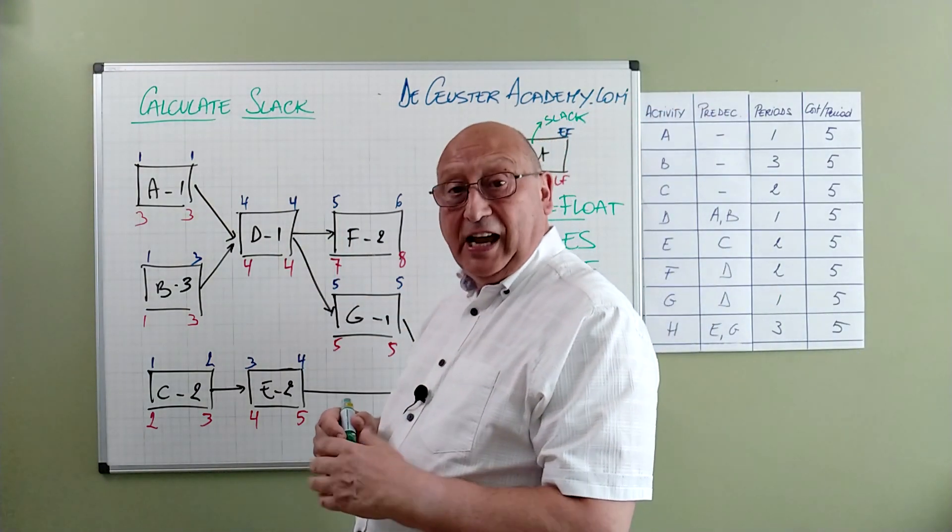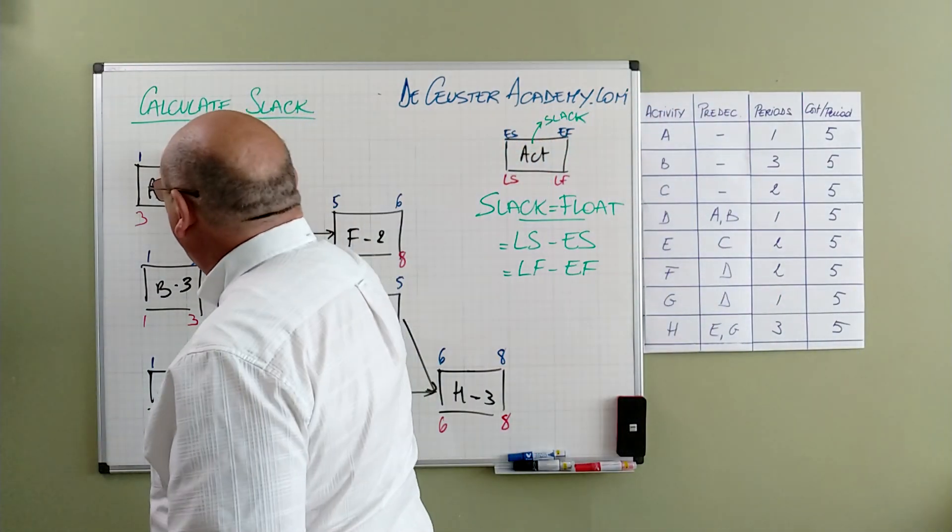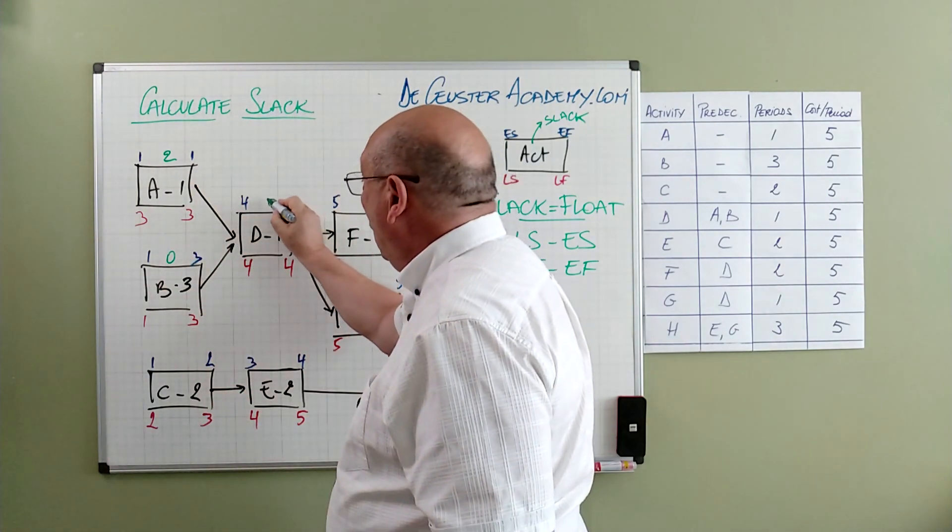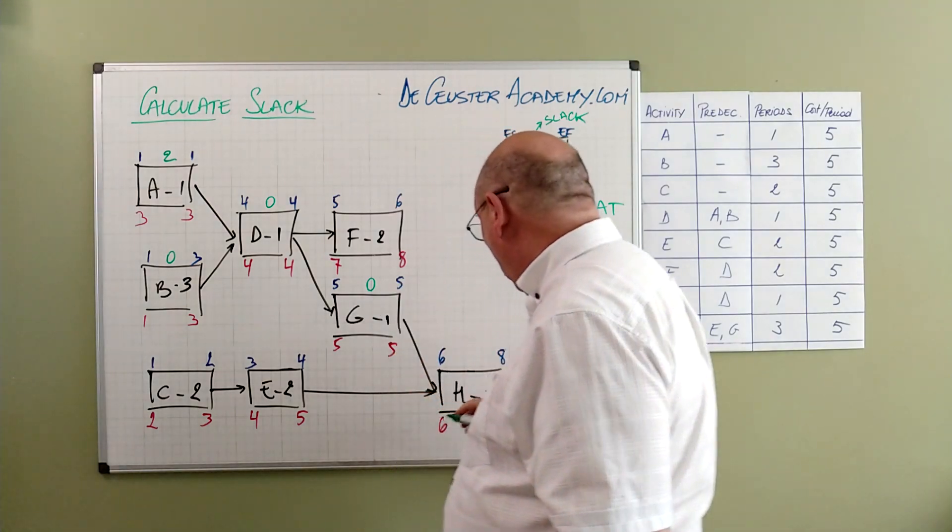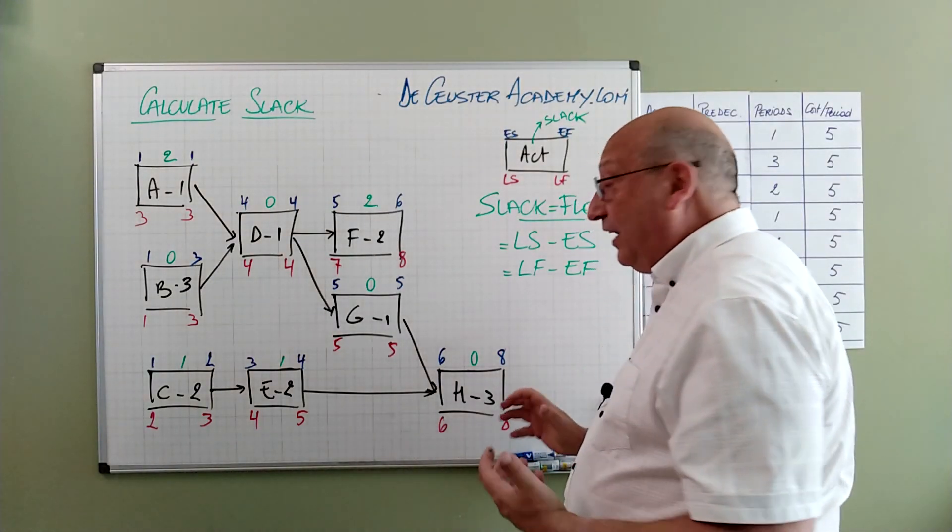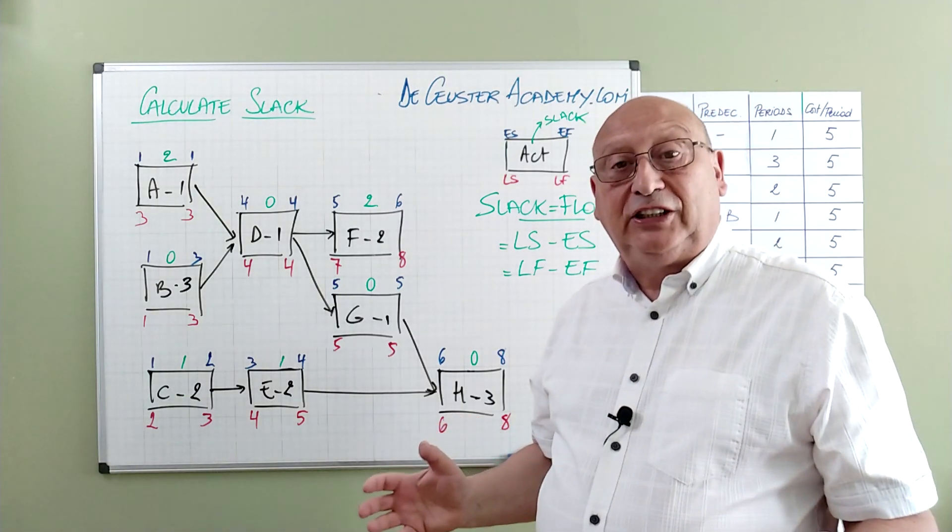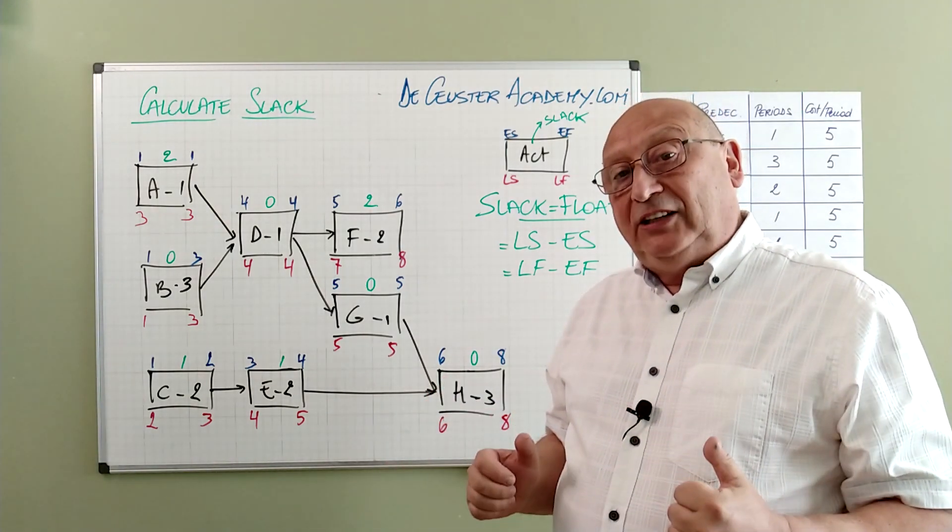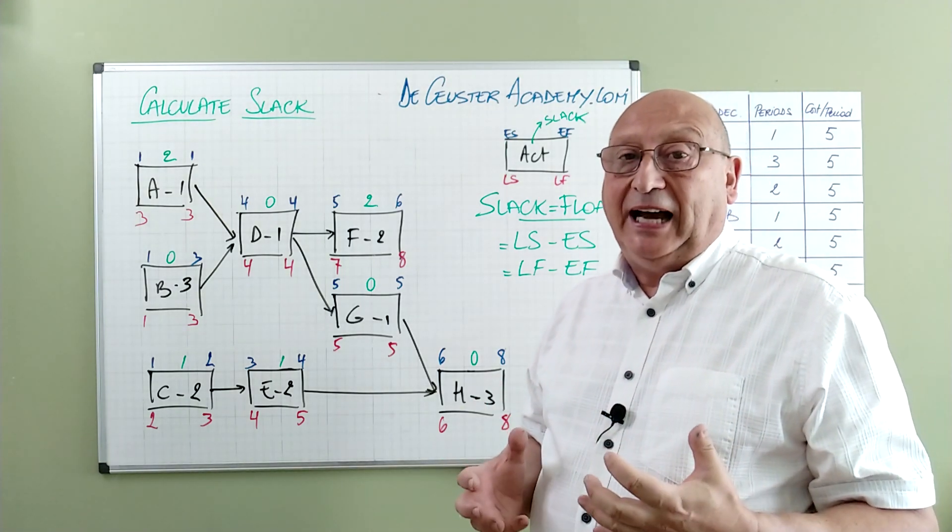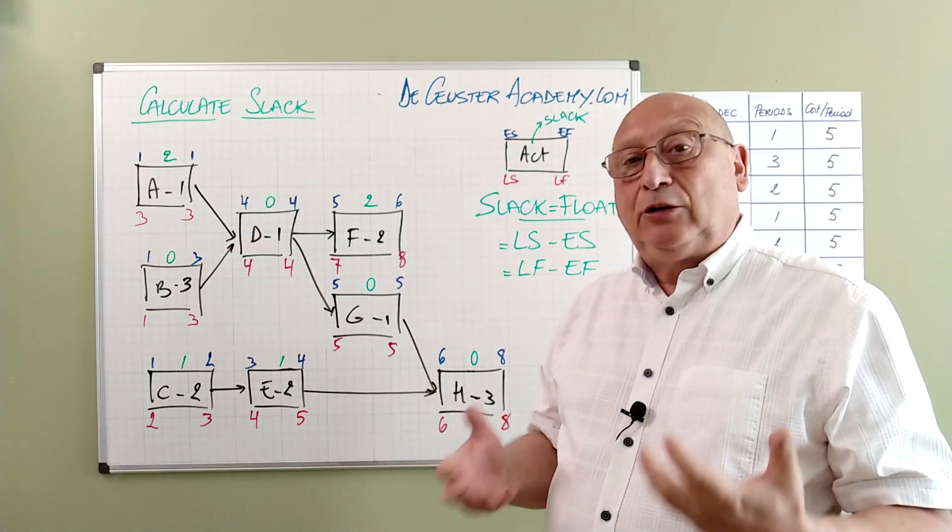We see for activity A, 3 minus 1 is 2. For activity B this is 0. For D also. For G also. For H also. So here we have the slack or the float of the activities. And in some cases people will say the critical path is given by the activities with slack equal to 0.